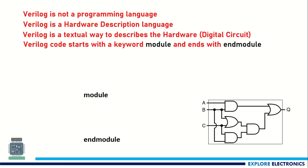Here you can see a digital circuit. This digital circuit will be represented as a module in Verilog coding. If the name of the circuit is 'abc', we are going to name the module as 'abc'. So 'module abc' is the module name, and that module ends with the keyword 'endmodule'.